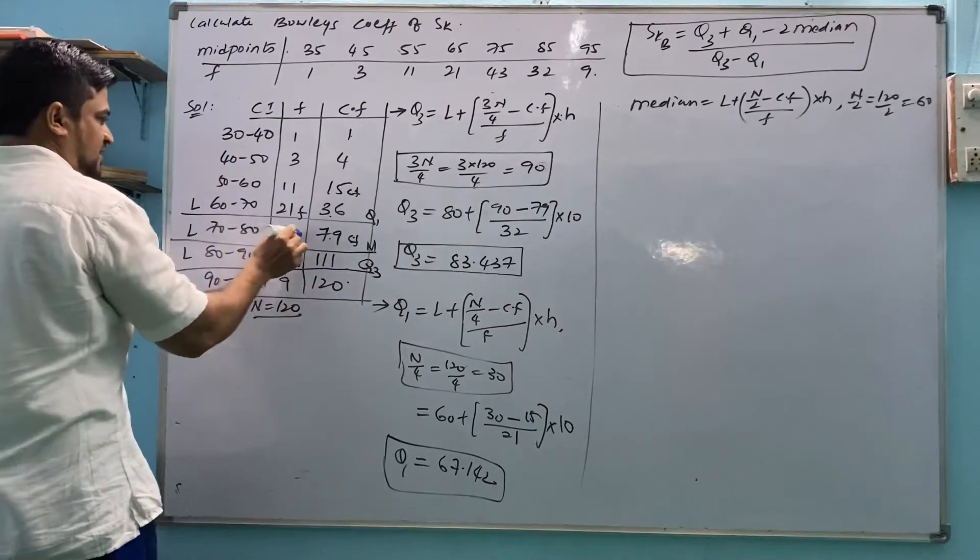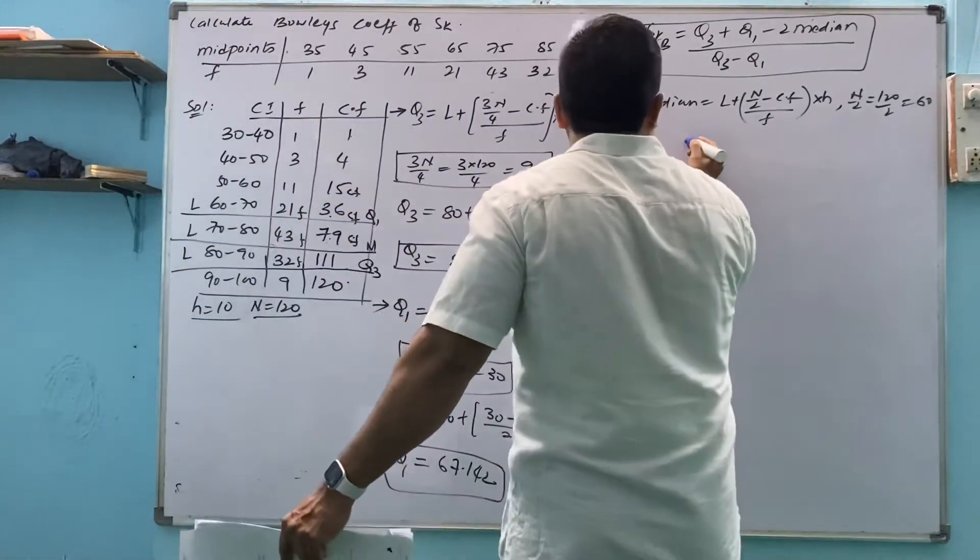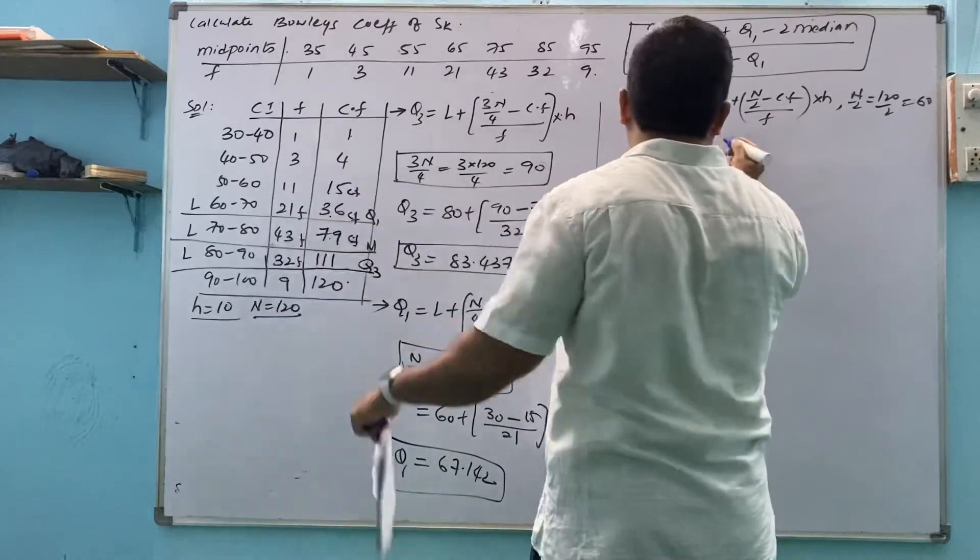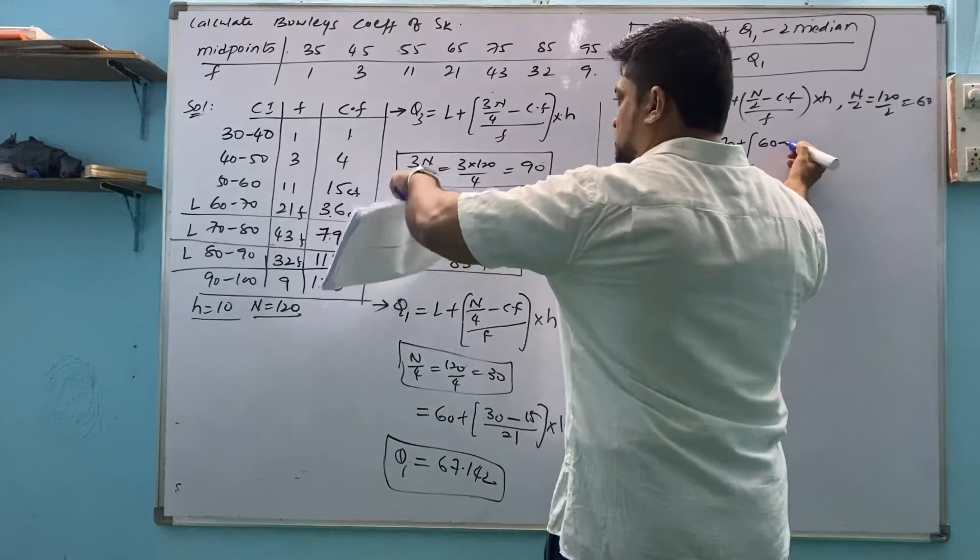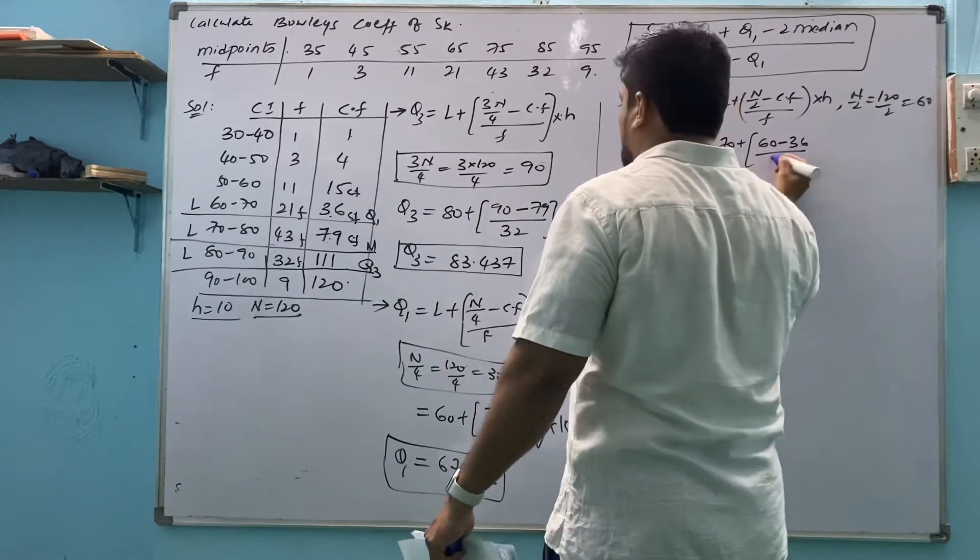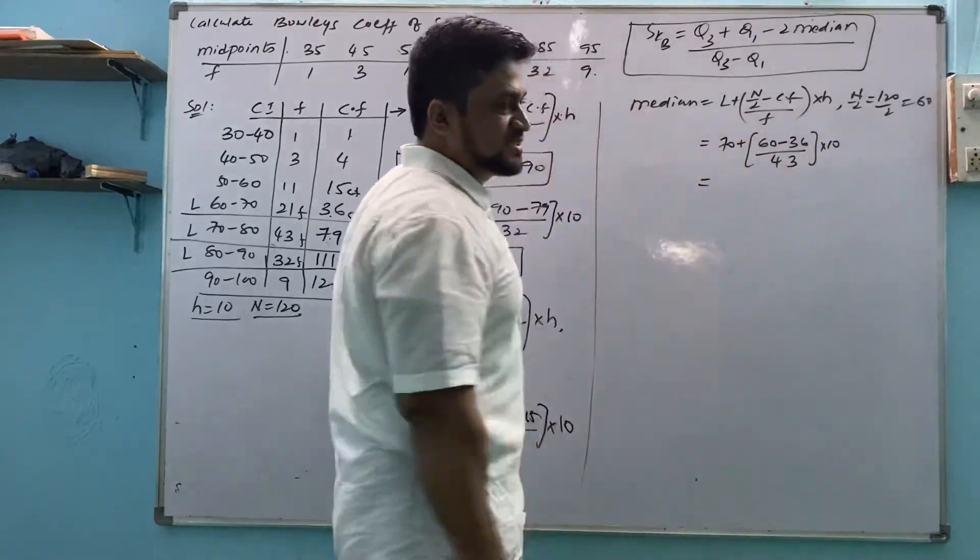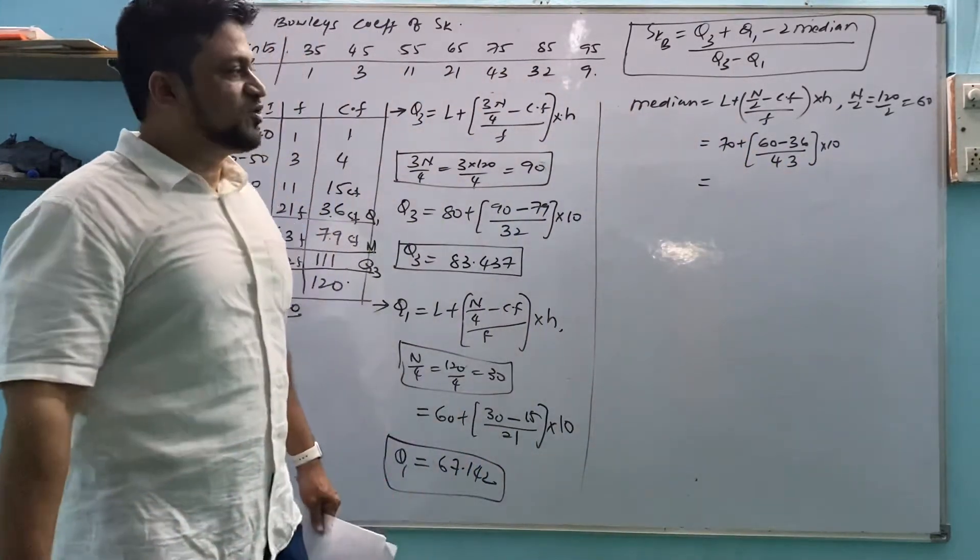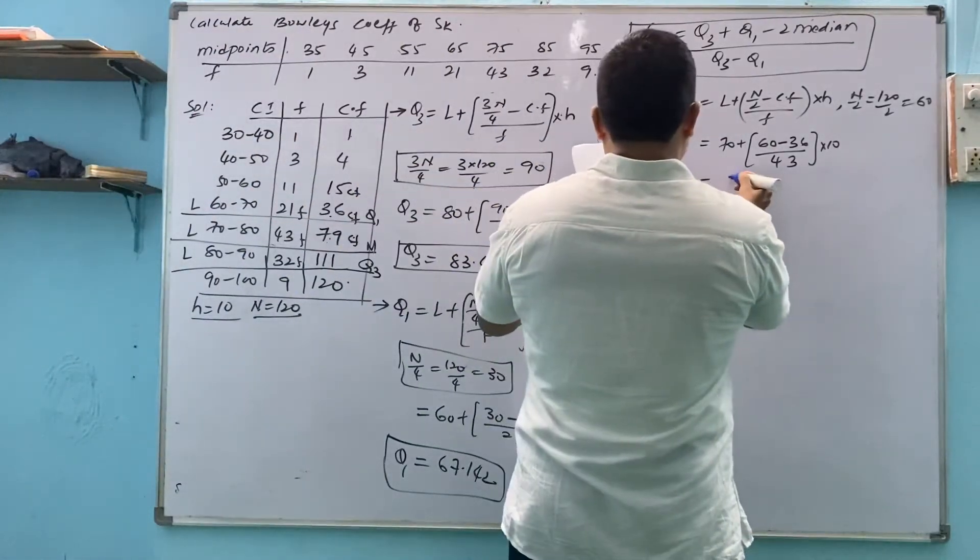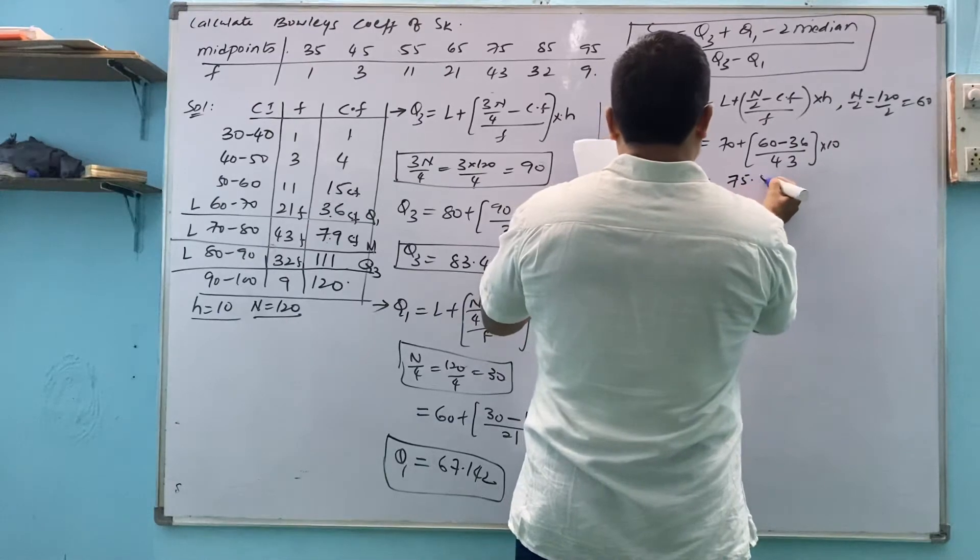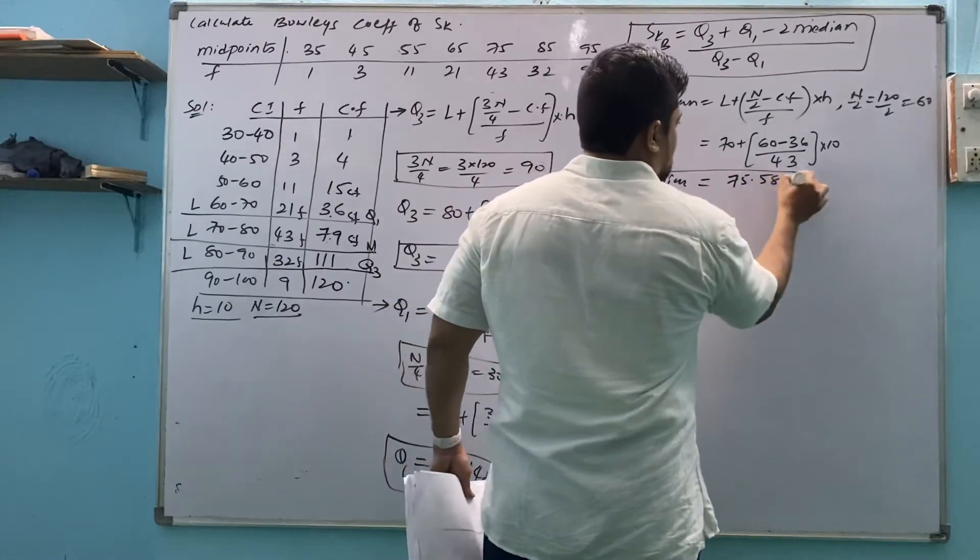So l, f, opposite upper value cf. Don't confuse because 3 times l is there. We have to take median l. Median l is 70. n by 2 is 60. Minus cf opposite upper value 36 by small f, 43 into h, 10. 60 minus 36 into 10 divided by 43 plus 70. So which is 75.581. So median, median is also known as Q2.